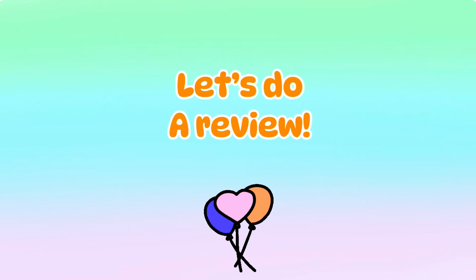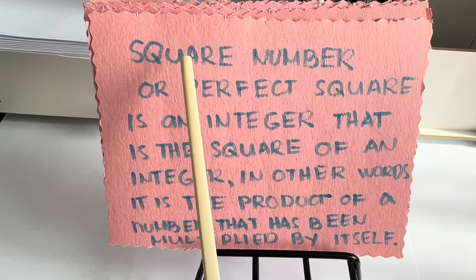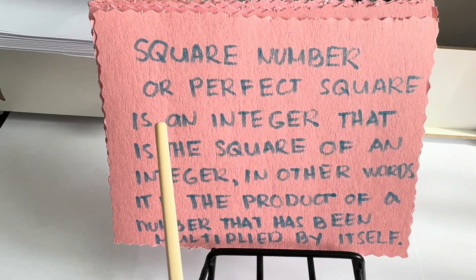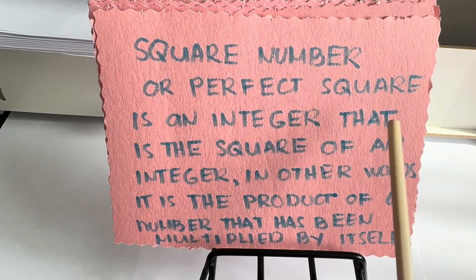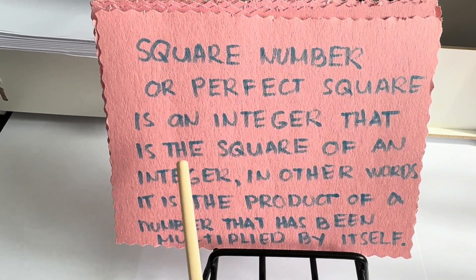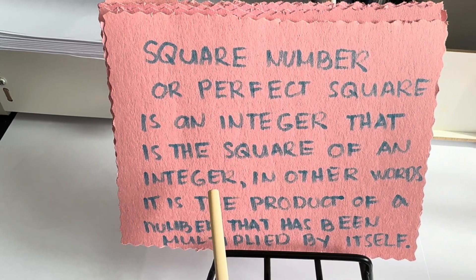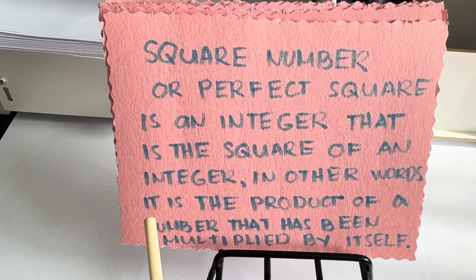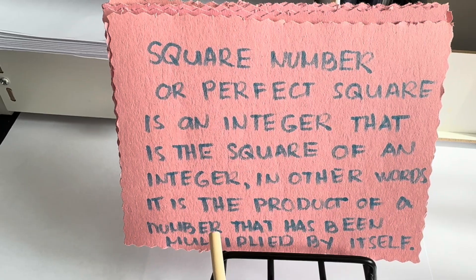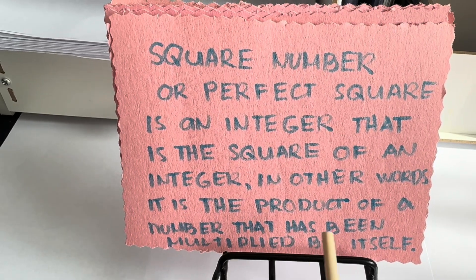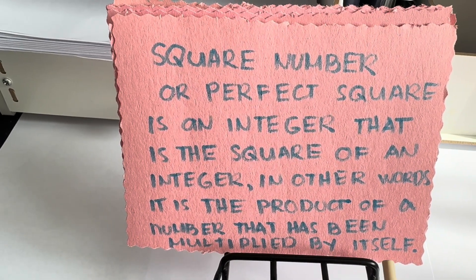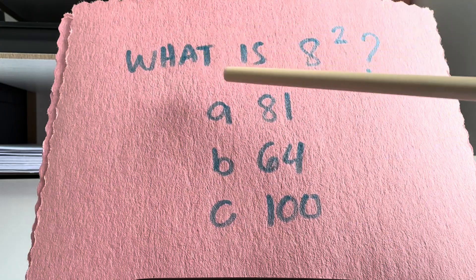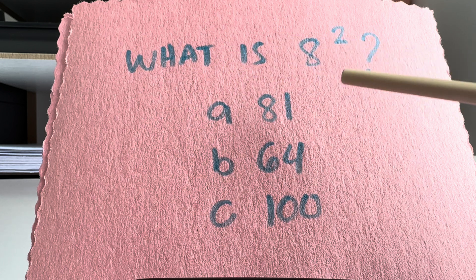Now, join me and let's do a review. A square number or perfect square is an integer that is the square of an integer. In other words, it is the product of a number that has been multiplied by itself.